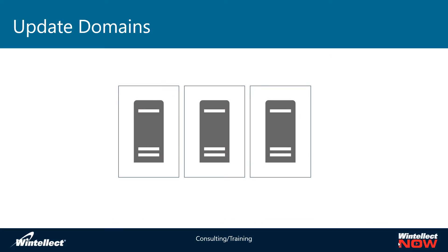Similar to that is an update domain. An update domain is essentially a logical grouping of virtual machines. In your availability set you specify — for example, three update domains — and this distributes your virtual machines across those update domains so that when the underlying Azure infrastructure goes to be patched, it doesn't take down your entire application. It will take down one update domain, patch it, reboot the virtual machines, and bring them back up without disrupting all the other update domains assigned to your availability set.